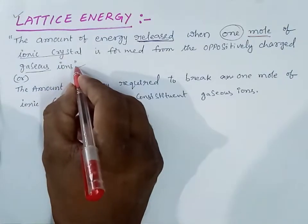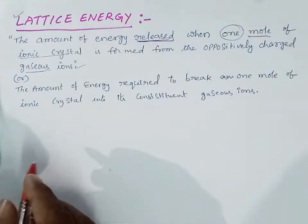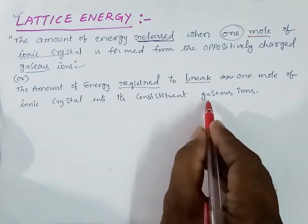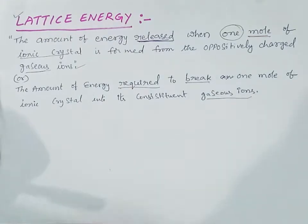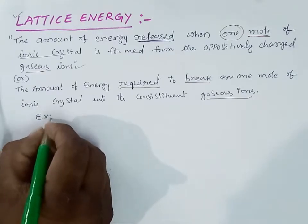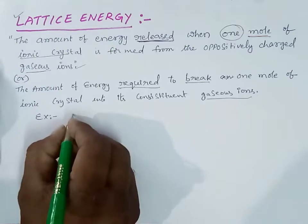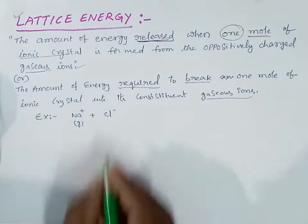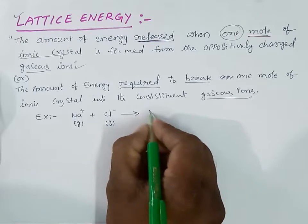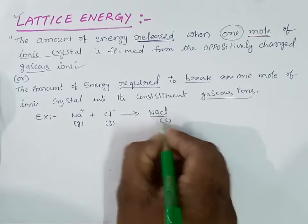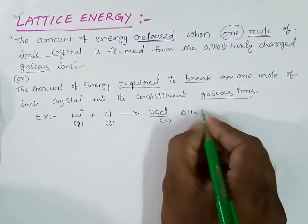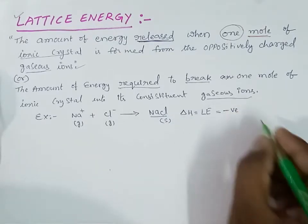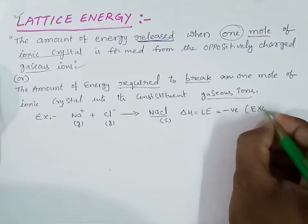Lattice energy may also be defined as the amount of energy required to break one mole of ionic crystal into its constituent positively and negatively charged gaseous ions. For example, in the formation of sodium chloride crystal, when one mole of sodium gaseous ion approaches one mole of chloride gaseous ion and forms one mole of sodium chloride ionic crystal, the amount of energy released is the lattice energy. Since energy is released, we use a negative value, and these reactions are known as exothermic reactions.